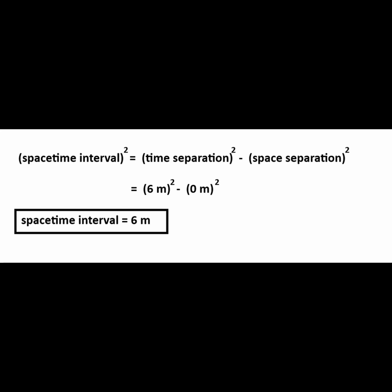Notice that the beam of light started and ended at the same spot on the floor, so it has a net separation in space of 0 meters. Then the spacetime interval squared is equal to 6 squared. The spacetime interval is computed as 6 meters.